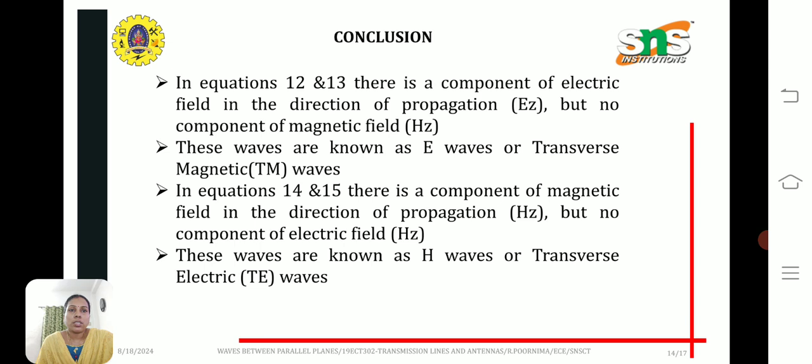In equations 12 and 13, there is a component of electric field in the direction of propagation, but no component of magnetic field. These waves are known as E waves or Transverse Magnetic waves.